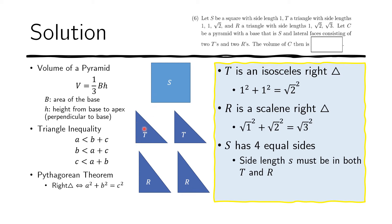Therefore there must be some length in T that is also equal to some length in R, because those will become the sides of this square. We only have two possibilities: the side of S could be 1, because 1 is common between T and R, or it could be square root of 2, because square root of 2 is also common between T and R.